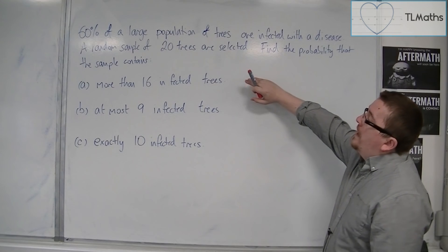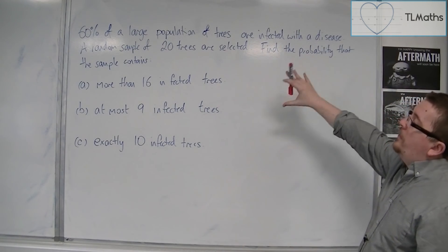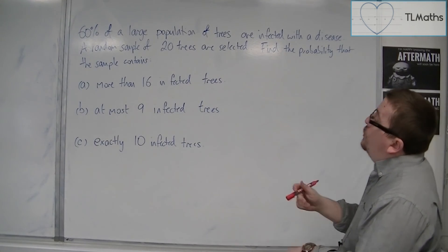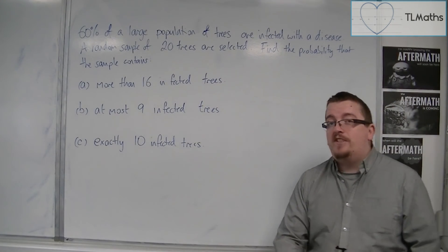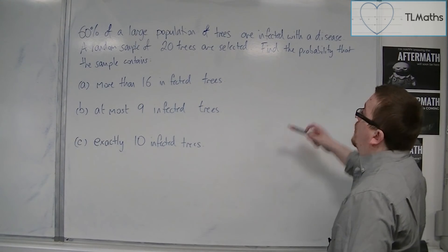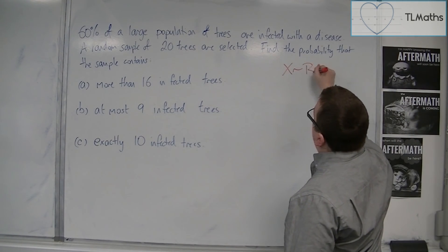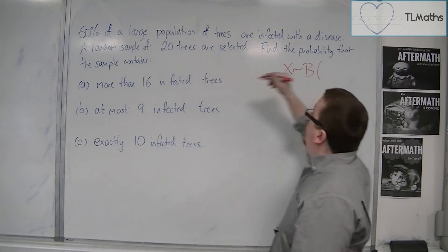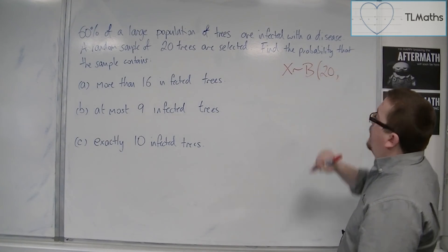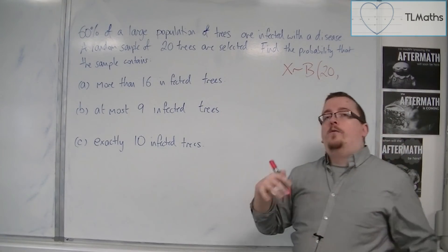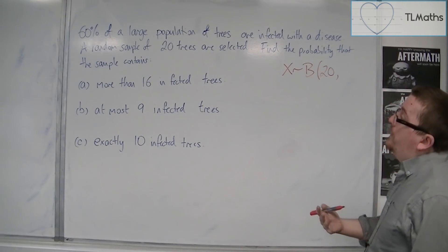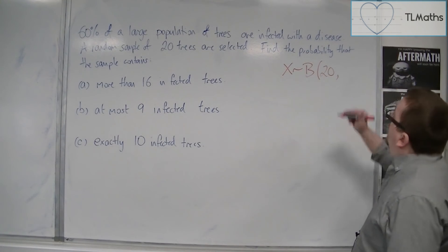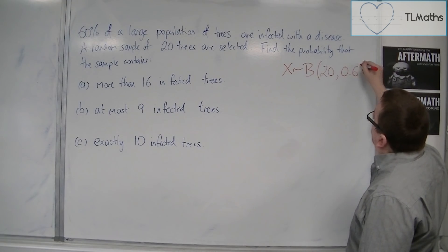Let's set the problem out as a binomial distribution problem, because ultimately the trees are either infected with the disease or they're not. So we have X is binomially distributed with N, the number in the sample, 20, and a probability of success, which in this case we will take to mean that the tree is infected, is 60%, so 0.6 is the probability.